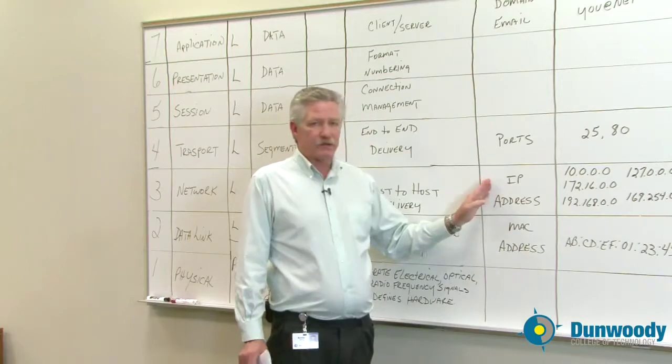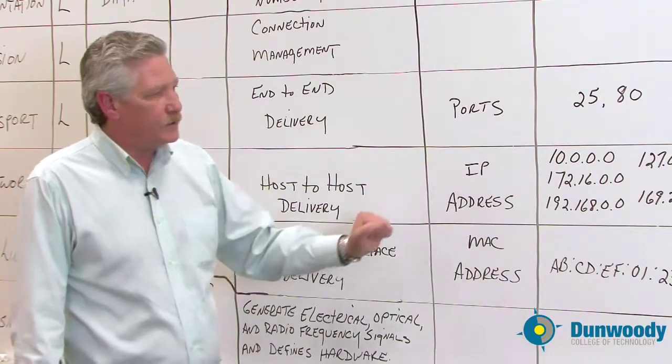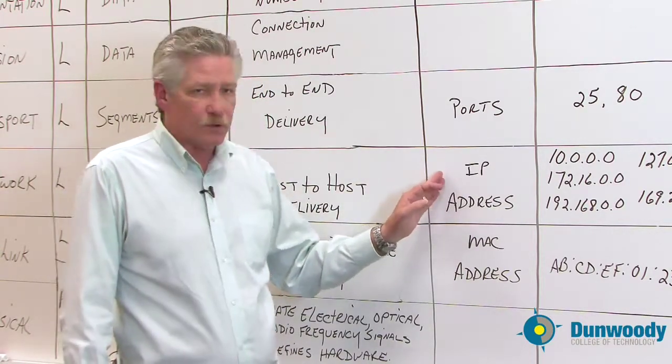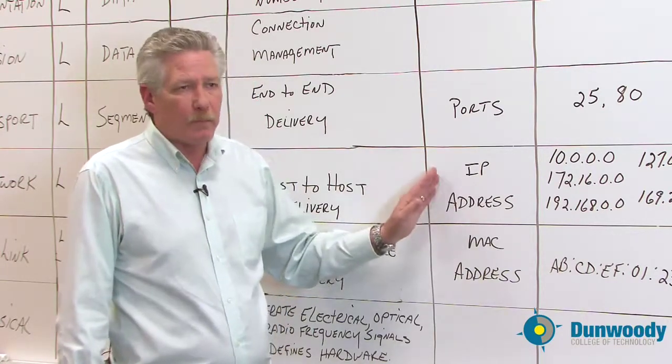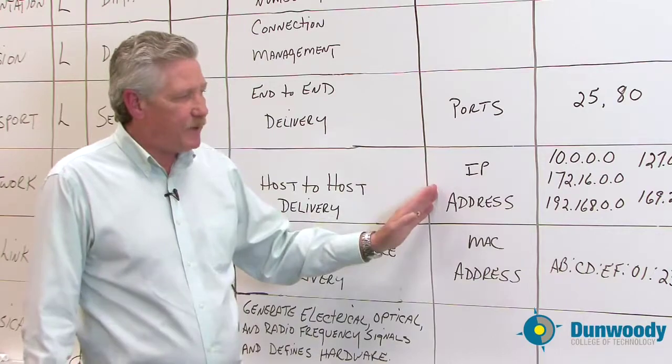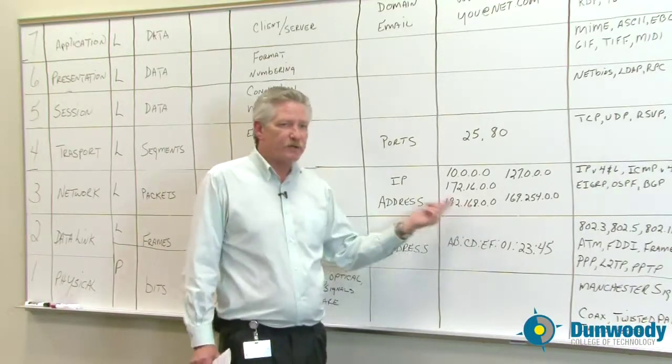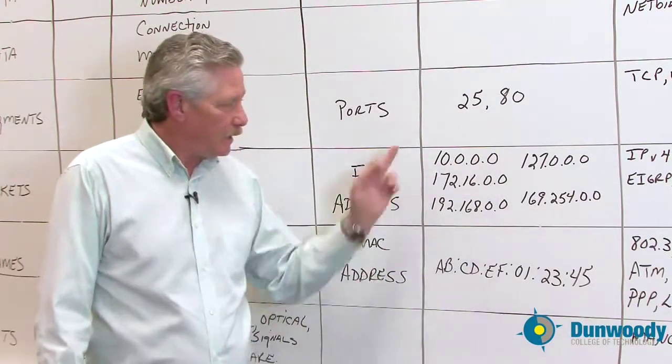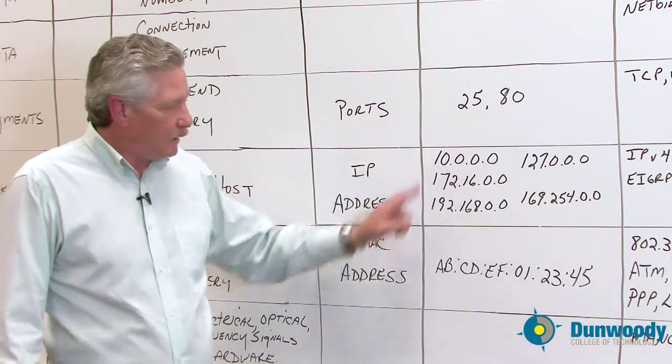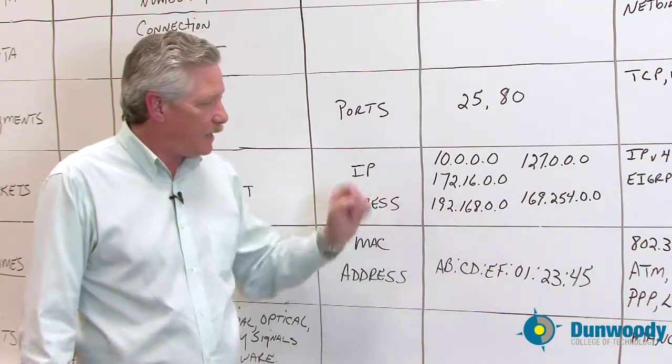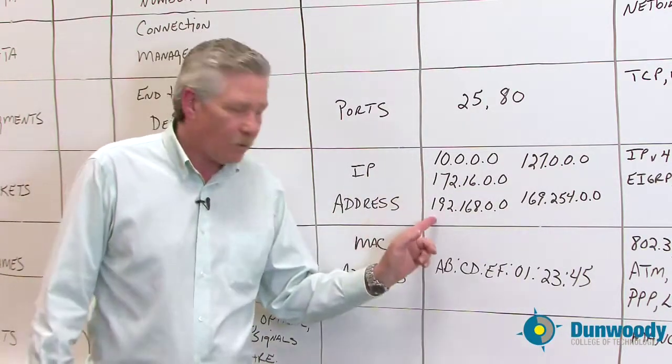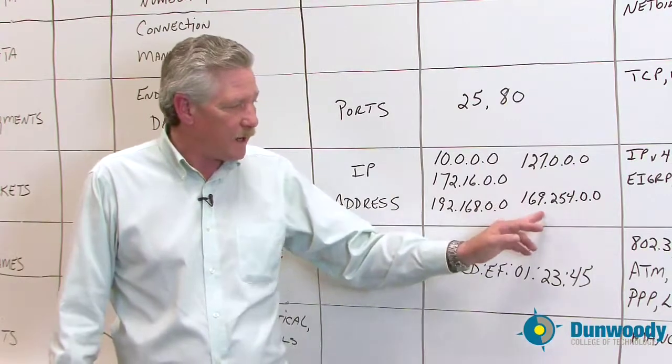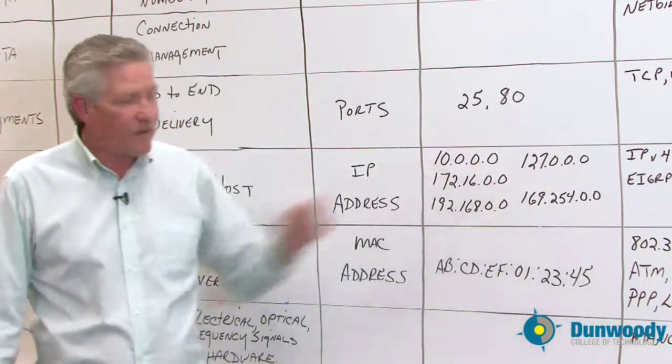And anymore we use IP addressing. In the old days of Novell we used to use IPX SPX and there were other networking protocols used to move the data. Today's world we're all about TCP IP. So we use the IP address, which in IP version 4, which we're still teaching in the classroom, it's a four octet number. And the 10.0.0.0 is an example. The reason I put these specific five up here, the 10 address, 172.16, the 192.168, the 127.0.0.0 and the 169.254.0.0. These are five of the special addresses.